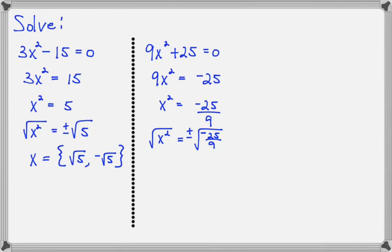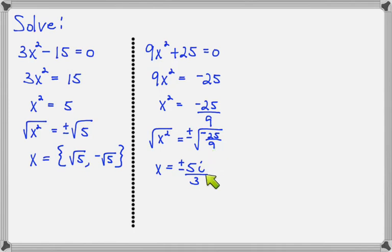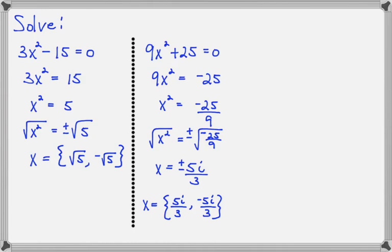Now we simplify both radicals. The square root of x squared is simply x. The square root of negative 25 gives 5i, and the square root of 9 gives 3. So we have two answers: positive 5i over 3 and negative 5i over 3. Note that in the first example we did not simplify the radical because it could not be simplified further, but here we can simplify and we are obligated to do so.